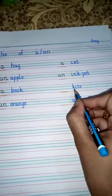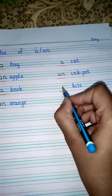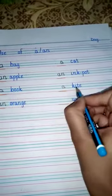Kite: kite, it is not a vowel. K is not our vowel so we will write 'a'. A kite.